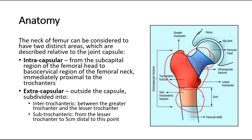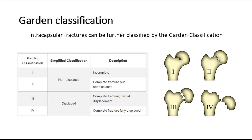Next, we look at classification. Intracapsular fractures can be further classified by the Garden classification. Type 1 is an incomplete fracture, non-displaced. Type 2 is a complete fracture, but not displaced. Type 3 is a complete fracture with partial displacement. Type 4 is a complete fracture, fully displaced.